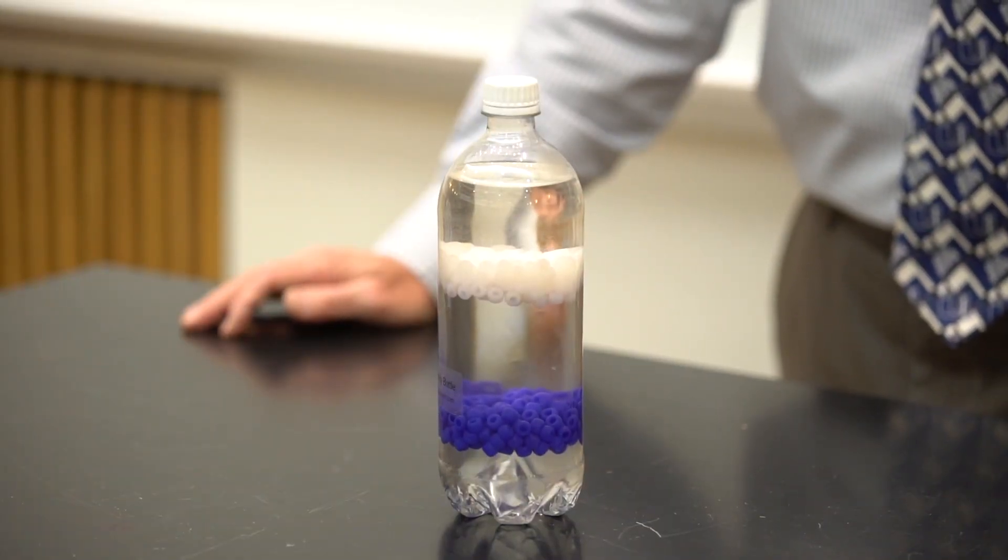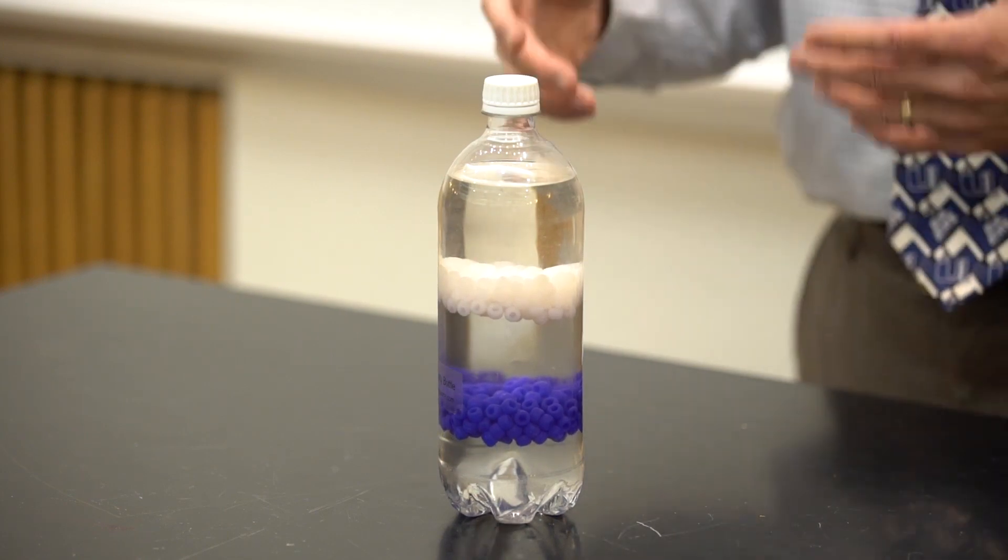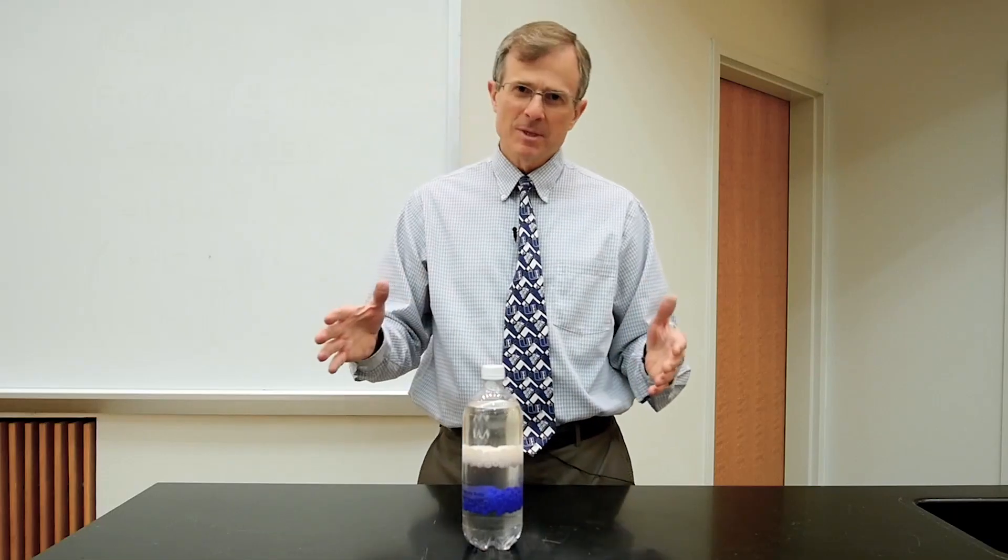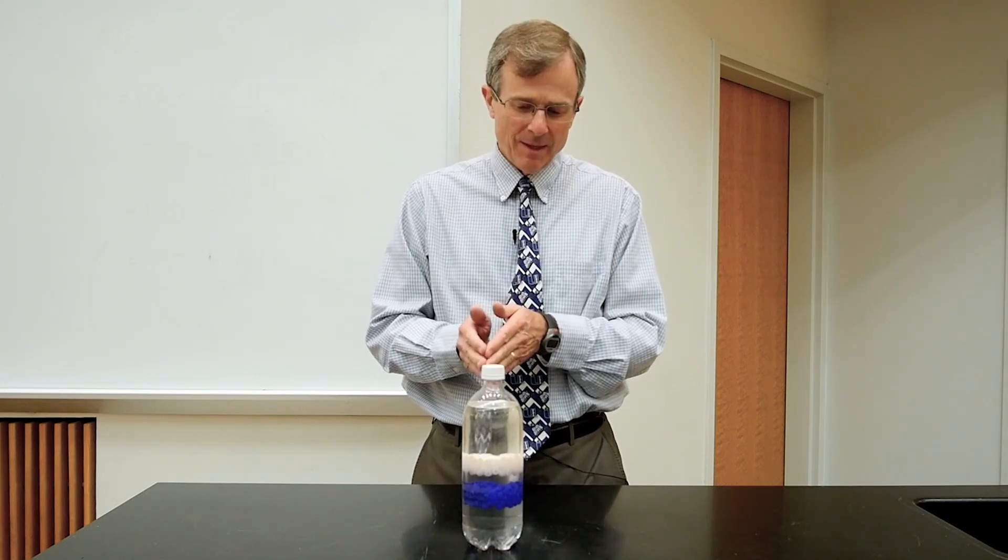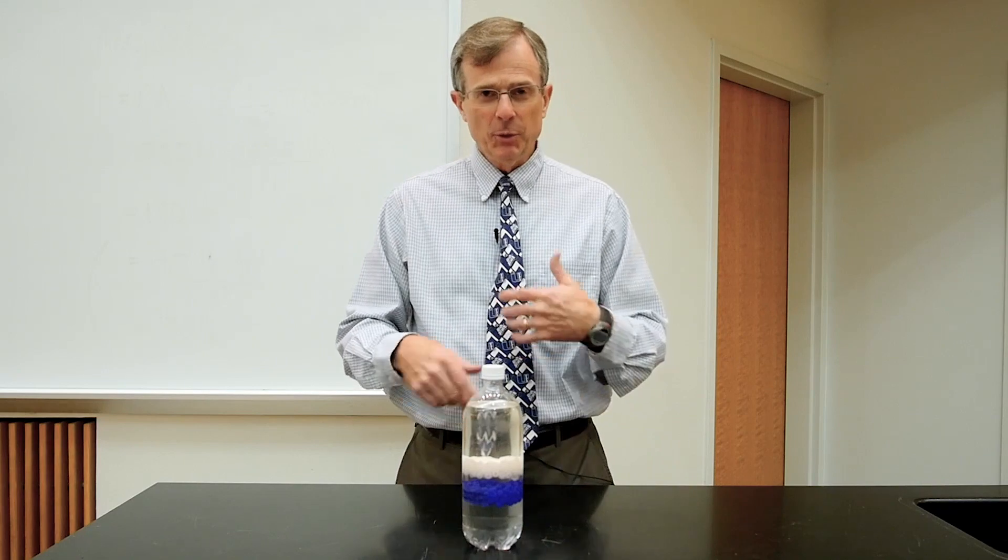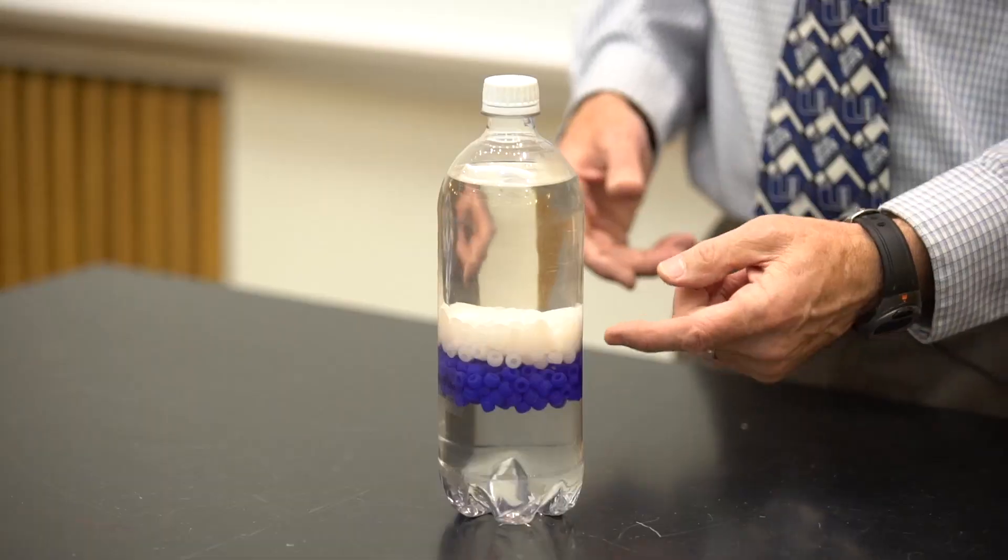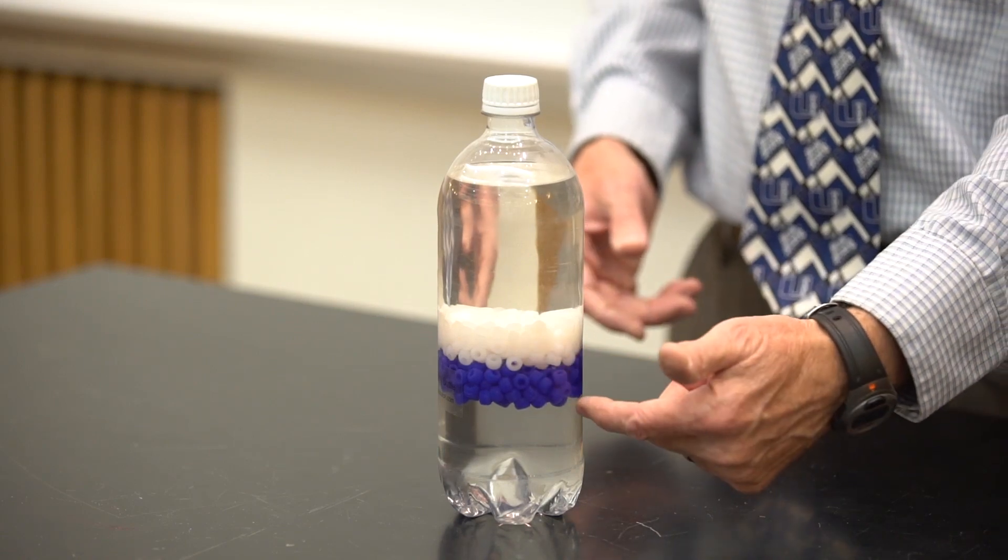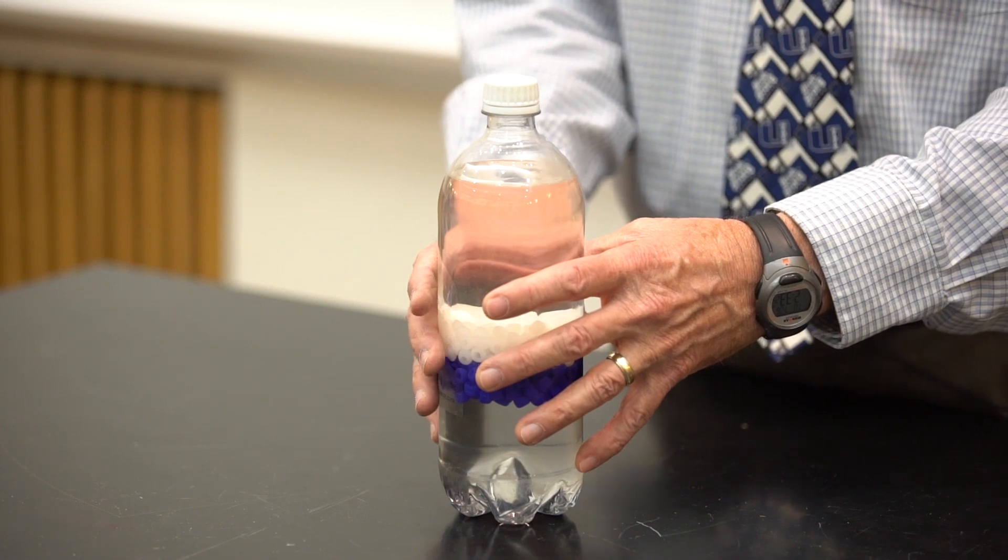What's happening here? When I mixed the two liquids, they became a new liquid whose density is halfway between the two original densities. And that density of that new mixed liquid happened to be right between the density of the white beads and the density of the blue beads.